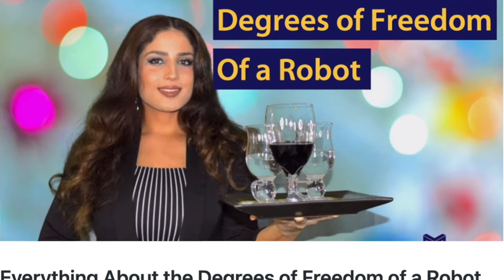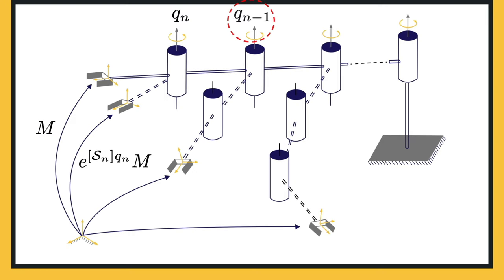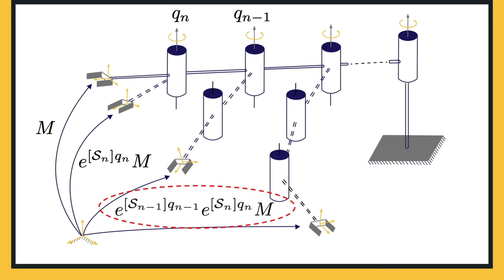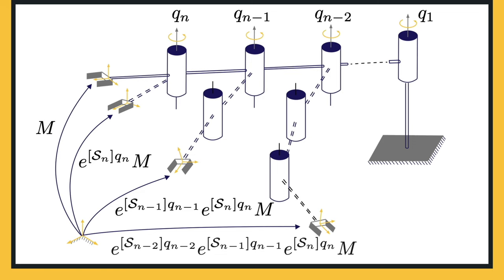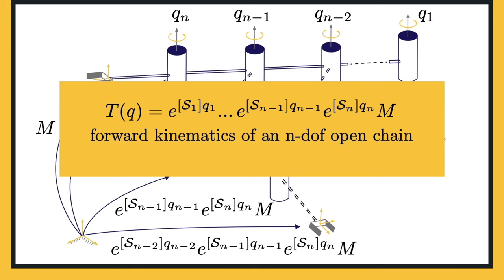To understand the different types of robot joints, please refer to the lesson on degrees of freedom of a robot. Now assume joint n-1 is allowed to vary; the end effector frame undergoes a further displacement, applying the screw motion to link n-1 and, by extension, to link n because link n is connected to link n-1 via joint n. Continuing this reasoning and allowing all joints q1 through qn to vary, we can find the configuration of the end effector frame relative to the base frame as a transformation matrix — this is the product of exponentials formula describing the forward kinematics of an N-DOF open chain.